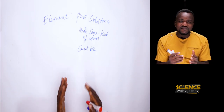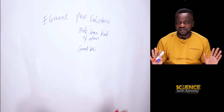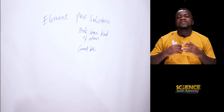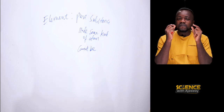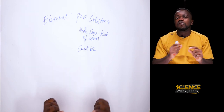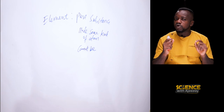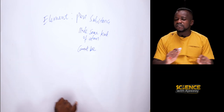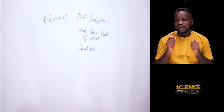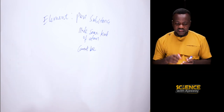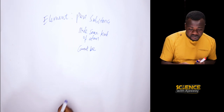An element is a pure substance that is made up of same kind of atoms and cannot be broken down into any simple form by any known chemical process. Let's proceed and look at what compounds are.